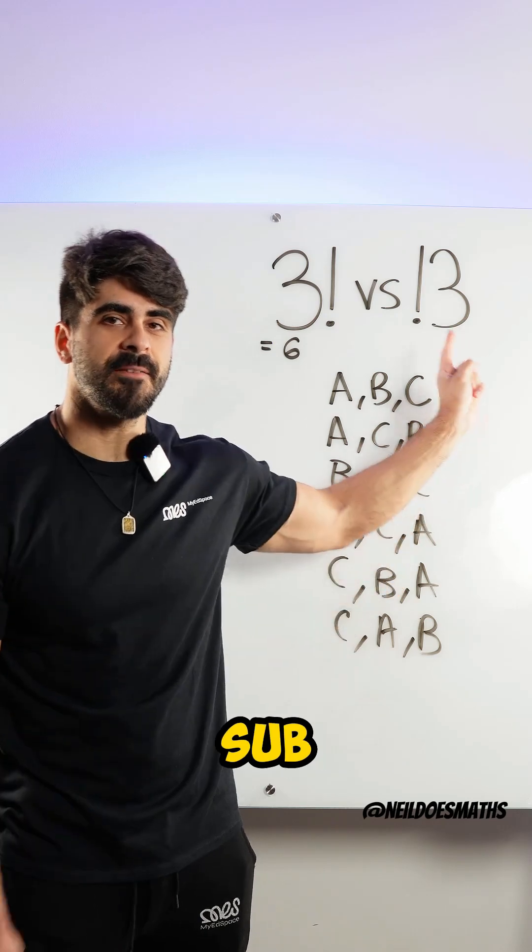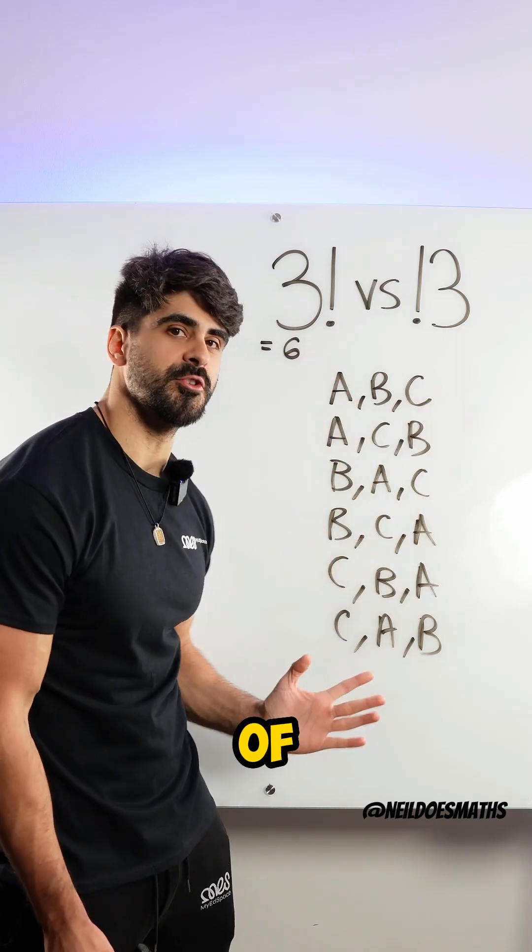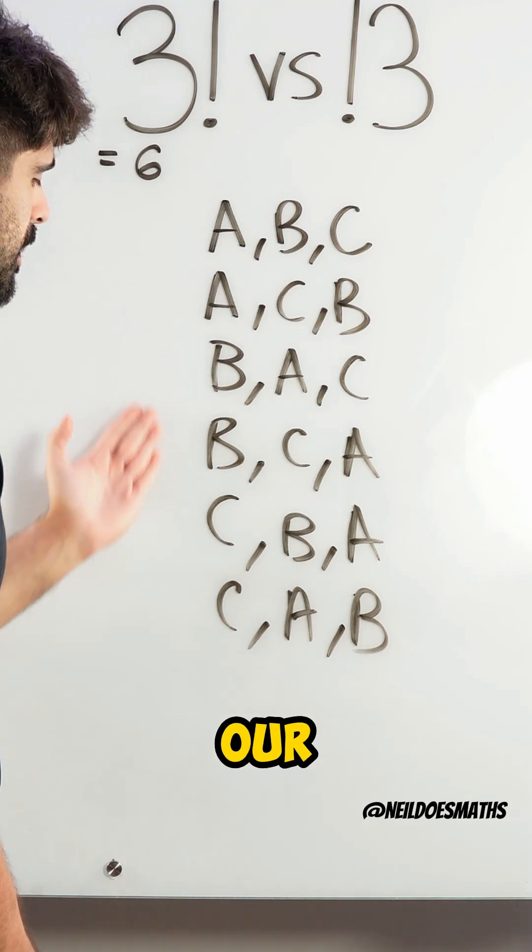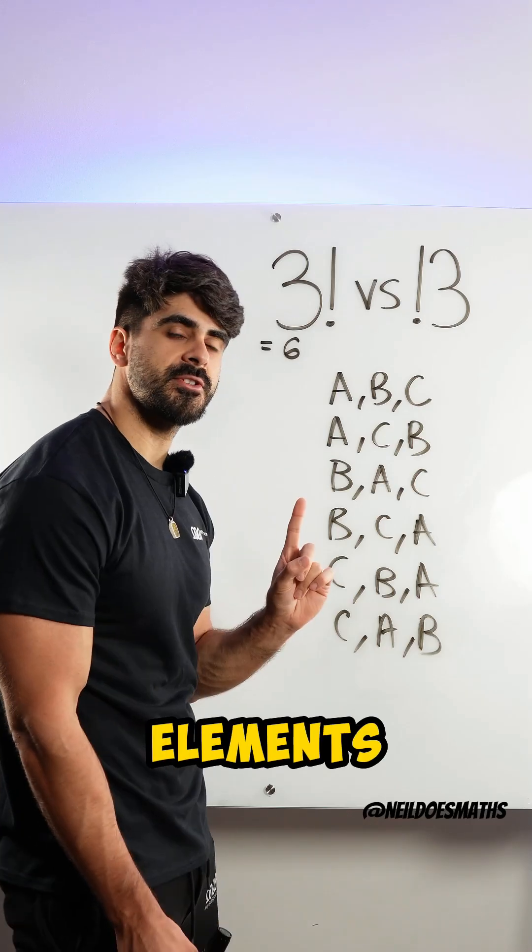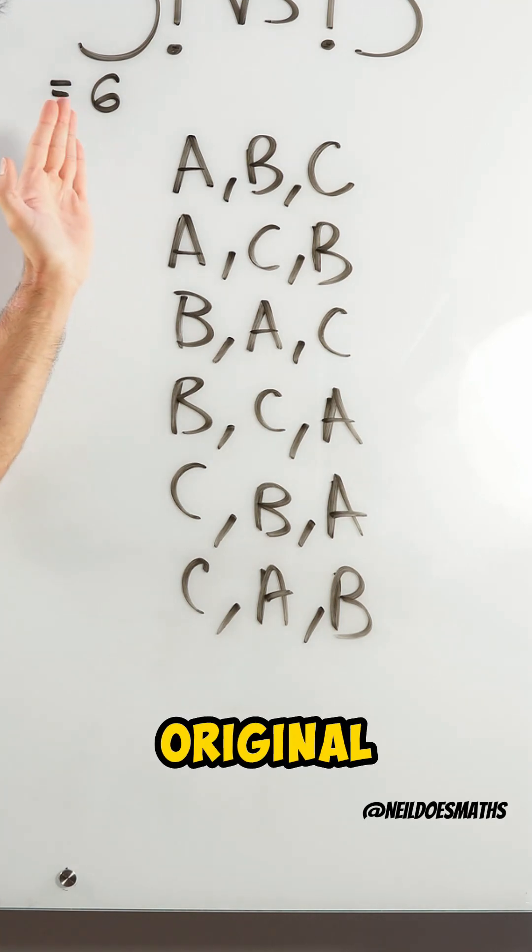Now, what do sub-factorials measure? Sub-factorials measure the number of derangements for a set of unique objects. And what it measures is when we look through our permutations, the elements cannot match the same position as the original set.